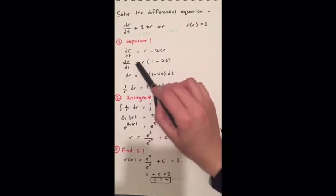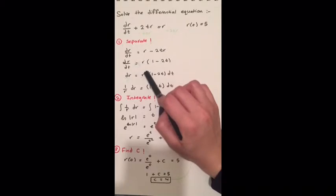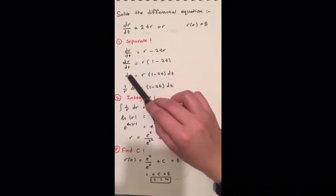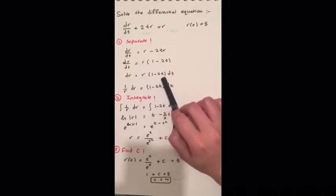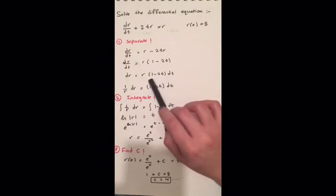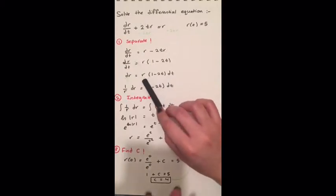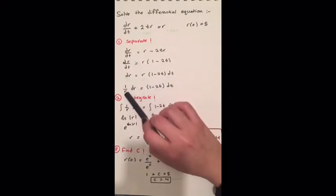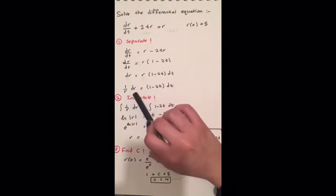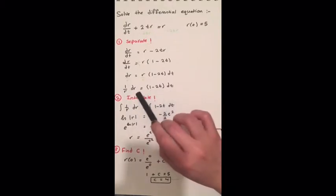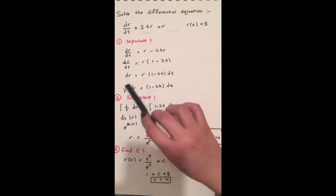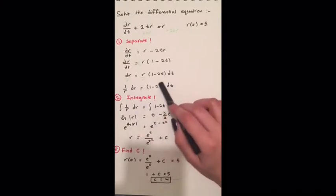Now we will do cross multiplying, so we will have dr equals 2r times (1 minus 2t) dt. Then we'll divide over r, and we'll get 1/r dr equals (1 minus 2t) dt. Now you are left with r's on this side and t's on the other side.